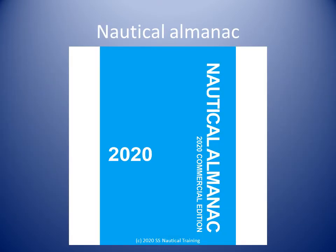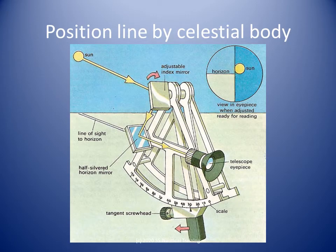So far we have looked to terrestrial objects for position lines. The Nautical Almanac is a publication describing the positions of a selection of celestial bodies for the purpose of enabling navigators to use celestial navigation to calculate the ship's position, using the traditional method of celestial navigation in conjunction with a sextant. When we use a sextant with celestial bodies — sun, moon, stars, and planets —